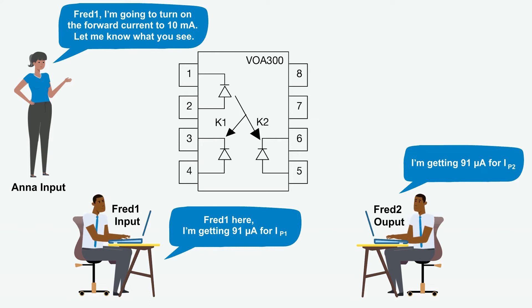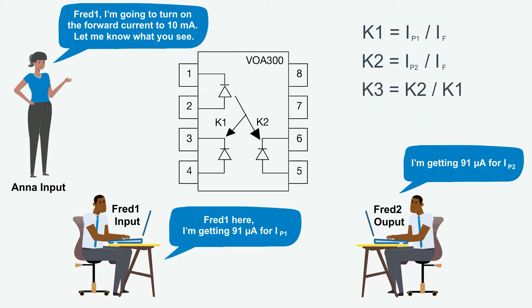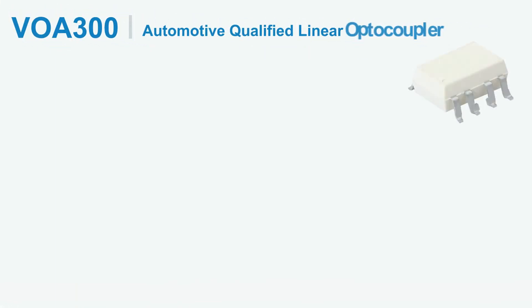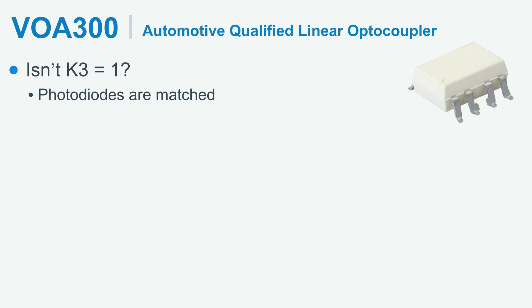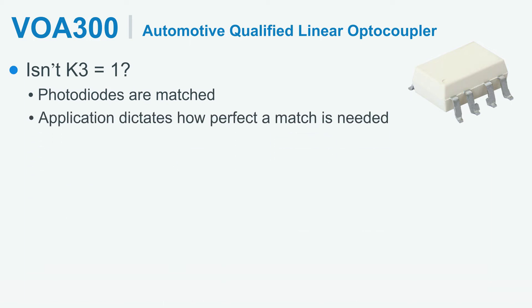Now I would like to introduce a couple of terms. K1 is equal to the output current on the input side divided by the infrared emitter's forward current. K2 is equal to the output current on the output side divided by the forward current. And K3, which is the transfer gain, is simply the ratio of K2 to K1. We said that the photodiodes are matched, so shouldn't K3 equal 1? Ideally, yes.